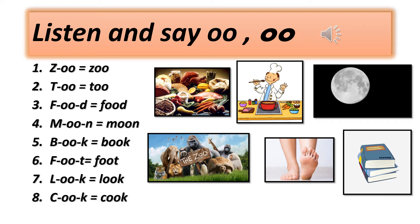Track B63, page 73, activity 19. Listen and blend the sounds. One: Z, oo — zoo. Two: T, oo — two. Three: F, oo, duh — food. Four: M, oo, nuh — moon. Five: Buh, uh, kuh — book.